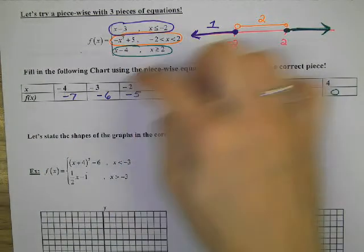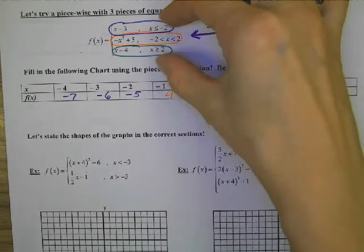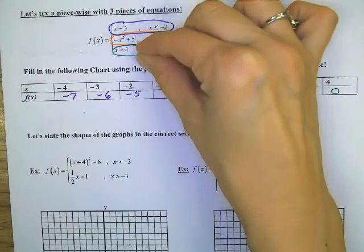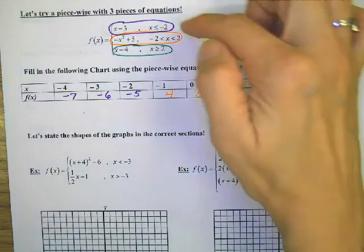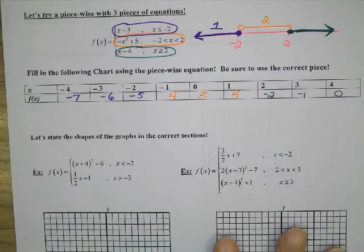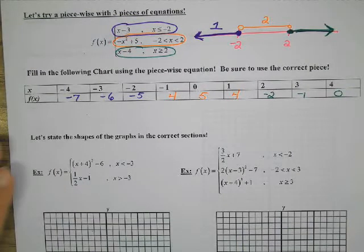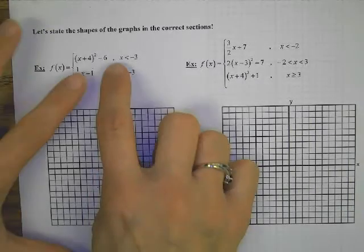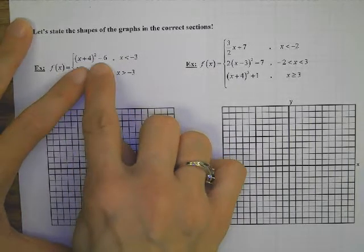So do you get the idea of how a piecewise function has three different equations — as many as you want, really — and it tells you where the numbers go? We are going to start graphing them. So I've got a parabola if you're less than negative 3, and an uphill line if you're more than negative 3.